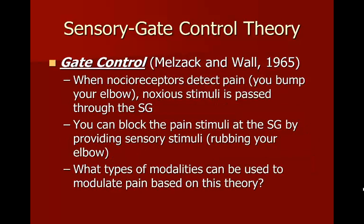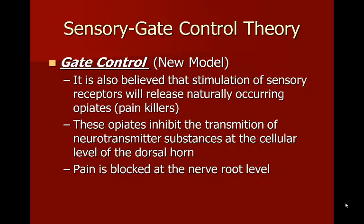When nociceptors detect pain — for example, if you bump your elbow — the noxious stimulus is passed through the substantia gelatinosa. You can block that painful stimulus at the substantia gelatinosa by providing a sensory stimuli, such as rubbing your elbow. We can also use e-stim to create a tingling feeling, or cold from ice, or other modalities to stop that pain.